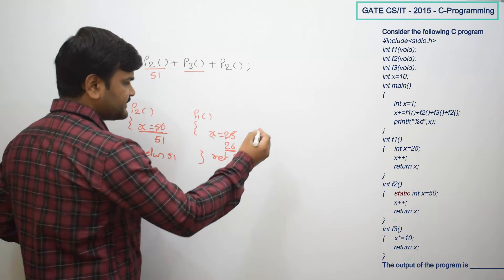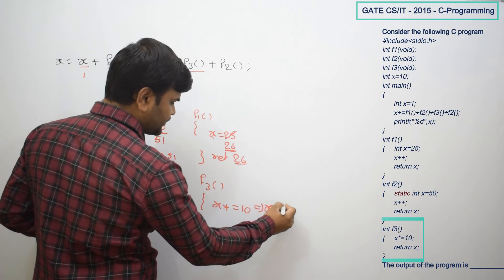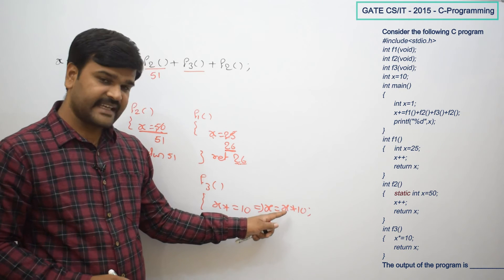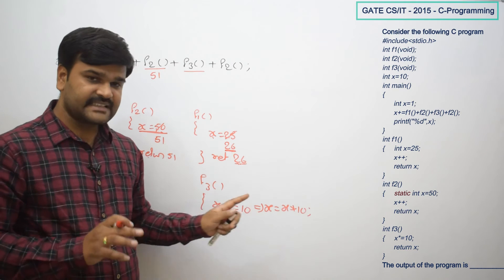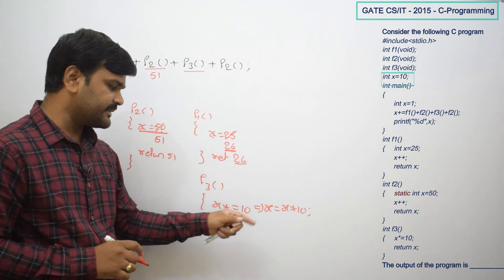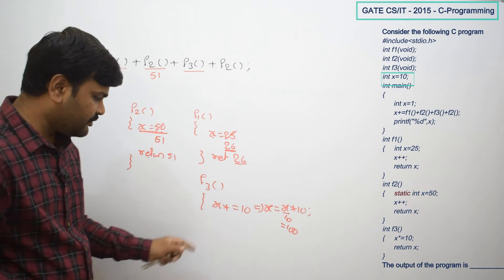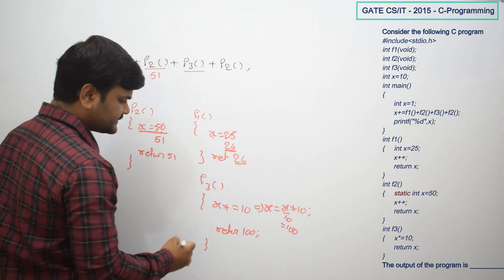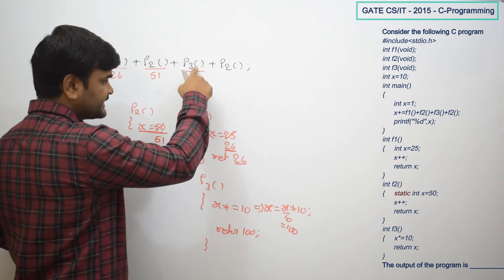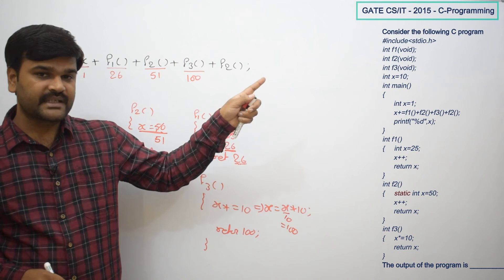Now if you observe f3, in f3 what we have is x star equal to 10, whose meaning is x = x * 10. What is x value? Is x declared locally? No. So we are looking globally — globally x is declared and its value is 10. So 10 into 10, this will become 100. This x value you are returning — 100. So wherever f3 is called, 100 is returned. And before returning, the global x value is updated to 100. It is not 10 now. These are the updates that happened after this step.